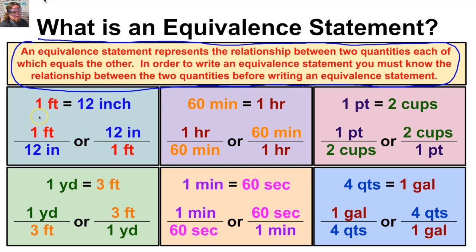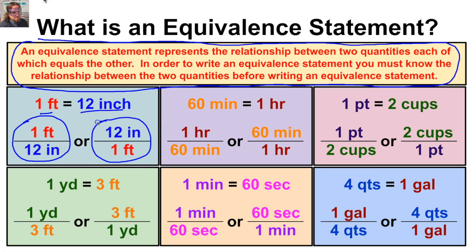We have an equivalence statement that tells us that one foot equals 12 inches. We use prior knowledge to create an equivalence statement showing the relationship between two quantities. We can also write this equivalence statement as a fraction: one foot over 12 inches, or as 12 inches over one foot.